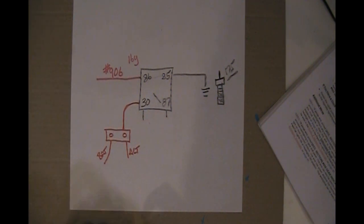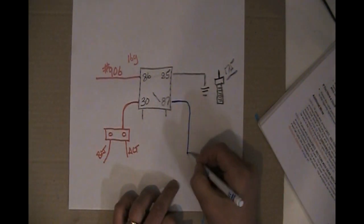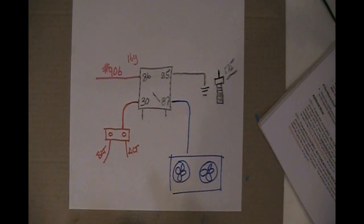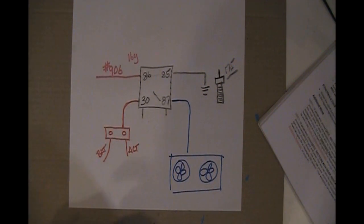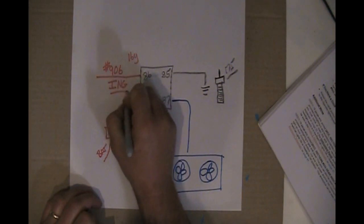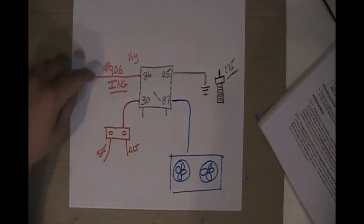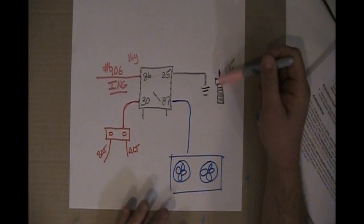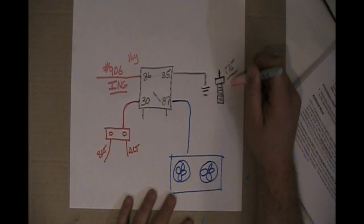And our final wire is 87. And 87 is blue and it goes to my dual fans. That's a poorly drawn fan, but those are my fans. And so 906 is hot with ignition. So in 906 wire, when you turn the ignition on, this wire is powered, but of course doesn't do anything until it's grounded out. It only grounds out when the engine hits 175.